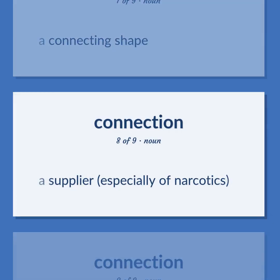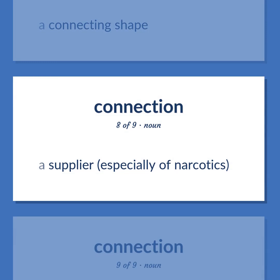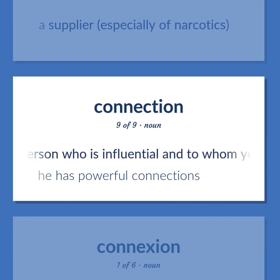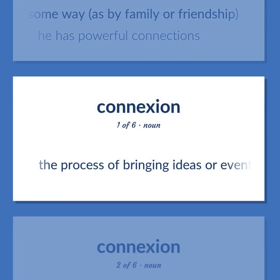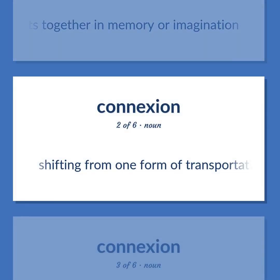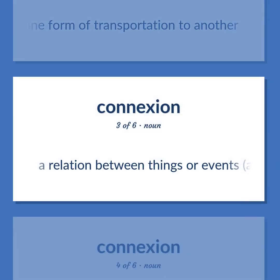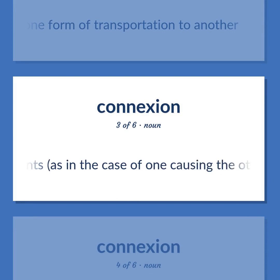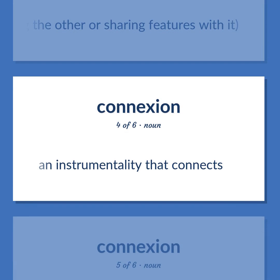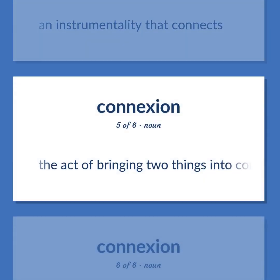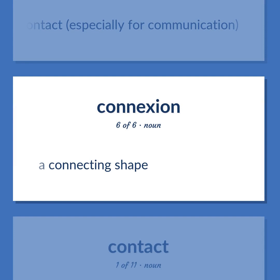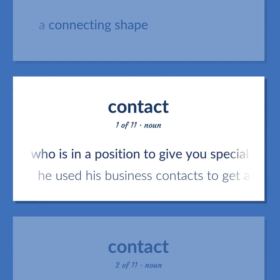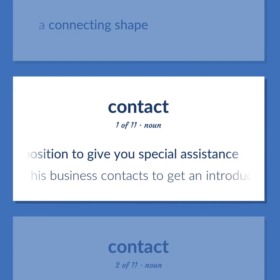A connecting shape. A supplier, especially of narcotics. Usually plural: a person who is influential and to whom you are connected in some way, as by family or friendship. He has powerful connections. The process of bringing ideas or events together in memory or imagination. Shifting from one form of transportation to another. A relation between things or events, as in the case of one causing the other or sharing features with it. The act of bringing two things into contact, especially for communication. A connecting shape. Contact. A person who is in a position to give you special assistance. He used his business contacts to get an introduction to the governor.